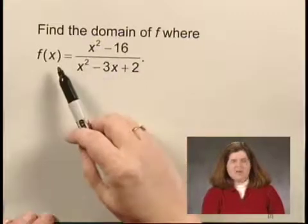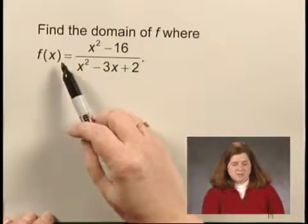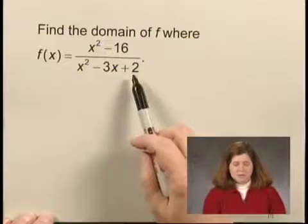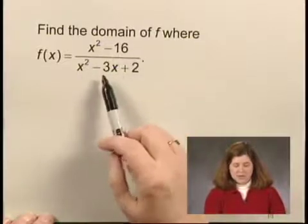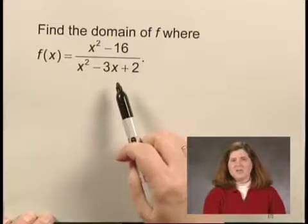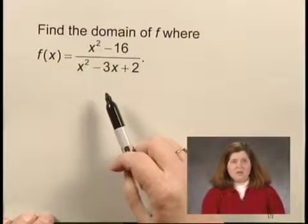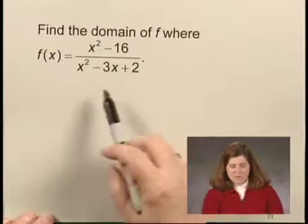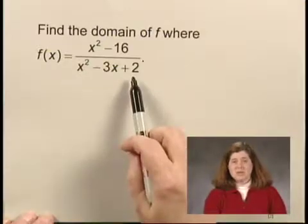The domain of the function is every value of x for which we can calculate x squared minus 16 over x squared minus 3x plus 2. We're going to start by finding the numbers that are not in the domain of f. The numbers that are not in the domain of f are the values that make the denominator 0.